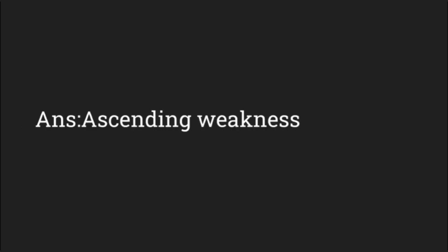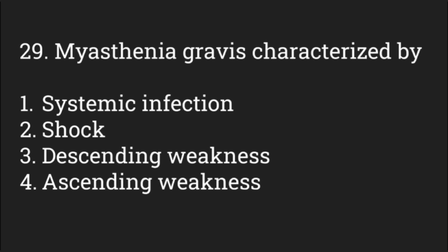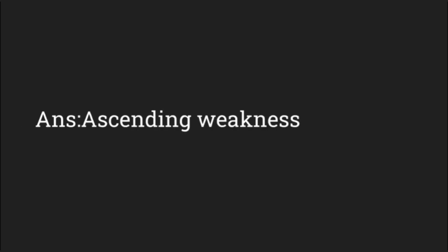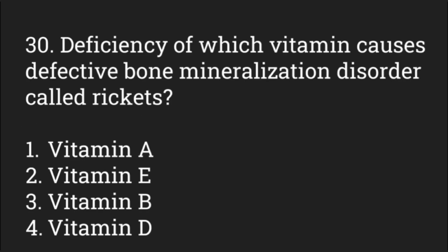Myasthenia gravis is characterized by — options: systemic infection, shock, descending weakness, or ascending weakness. The answer is ascending weakness. Myasthenia gravis is a disease of the neuromuscular junction and is an autoimmune disease.